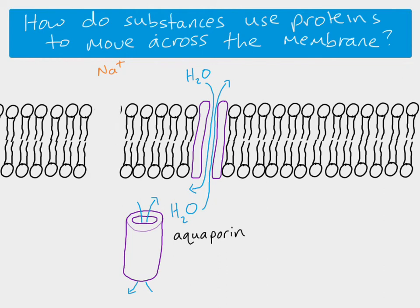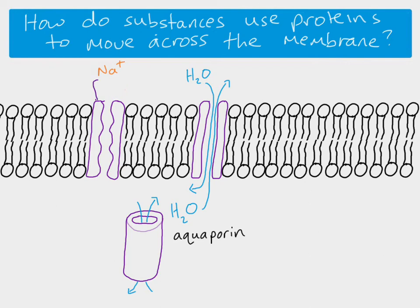Sodium ions would go through a different channel protein — it looks like a slightly different shape compared to the aquaporin. That's important because different substances have to go through a specific transport protein. Sodium ions have to go through a sodium transport protein; they cannot go through an aquaporin or a chloride protein — these transport proteins are specific. Some of these transport proteins have a gate, so sodium can go through only if the gate is open. Changes in voltage or the presence of certain molecules like hormones could cause the gate to open or close.